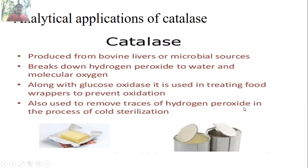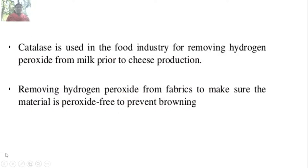Catalase is produced from bovine liver and microbial sources. It plays a role in the breakdown of hydrogen peroxide into water and molecular oxygen. Along with glucose oxidase, it is used in treating food wrappers to prevent oxidation. It is also used to remove traces of hydrogen peroxide in cold sterilization, in the food industry for removing hydrogen peroxide from milk prior to cheese production, and for removing hydrogen peroxide from fabrics to prevent browning.